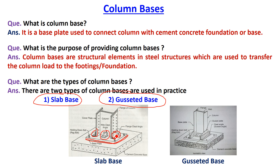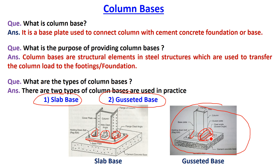In the case of slab base, columns are connected to the base plate with the help of cleat angles. Whereas if you look at the second figure, this I-section is connected to the base plate with the help of a gusset plate. In case of gusseted base, the cleat angle width is equal to the base plate width. Bolted connections are provided, but at the bottom, a gusset plate is used to connect the cleat angles, and then the cleat angle is connected to the base plate.